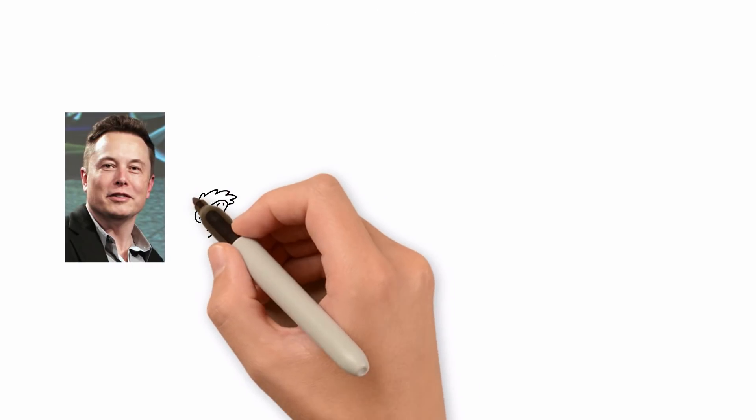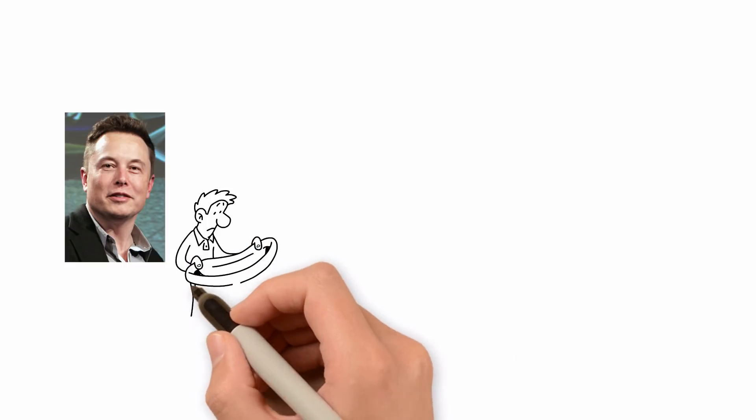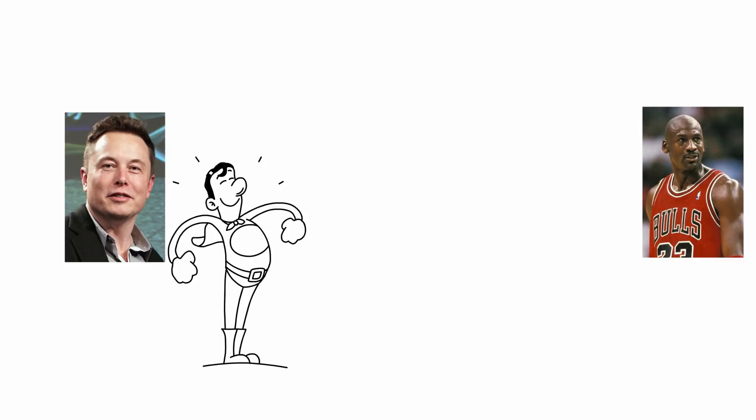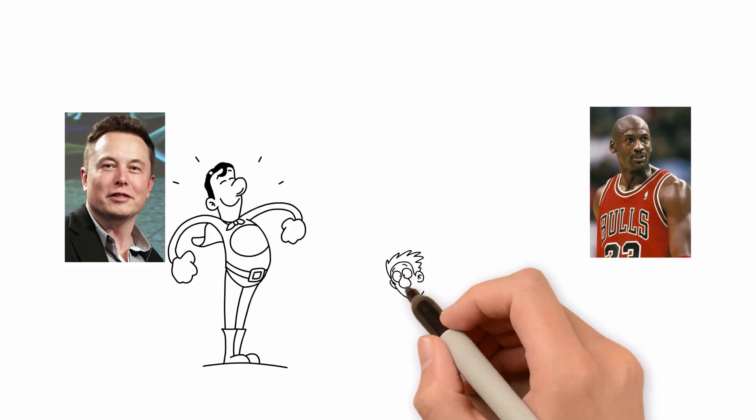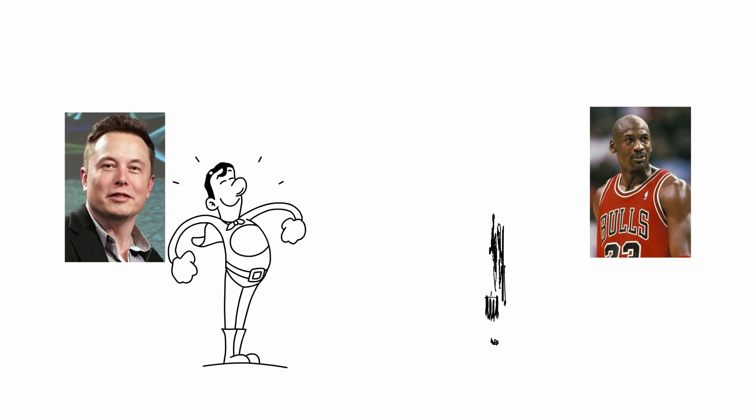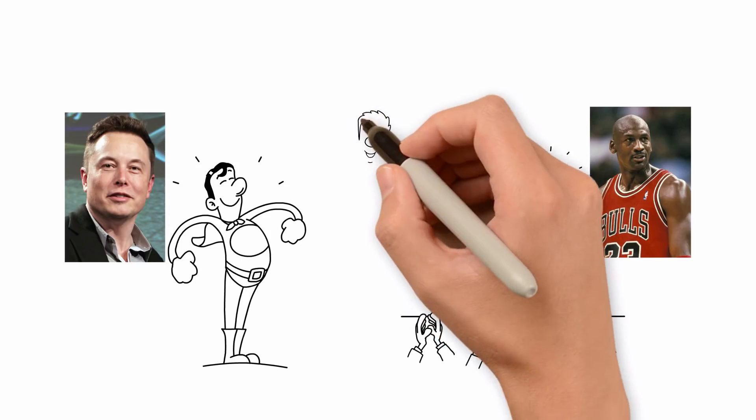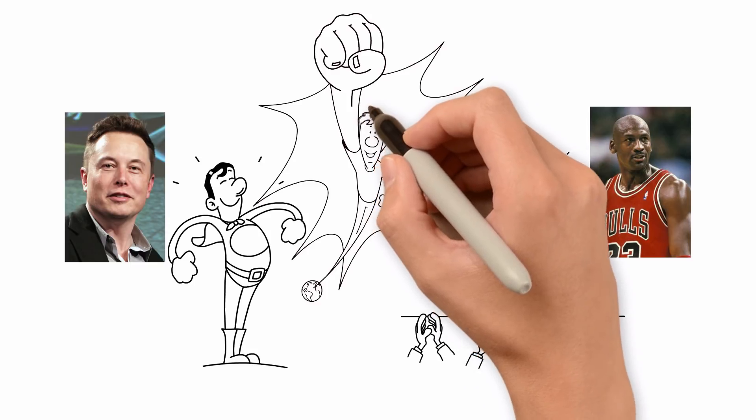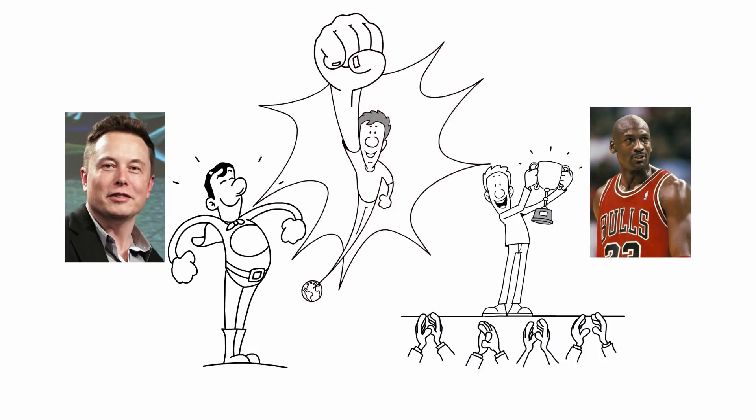Elon Musk was on the brink of losing both SpaceX and Tesla and going bankrupt in 2008. He rose from that setback to become one of the greatest entrepreneurs of our times. Michael Jordan was cut from his high school basketball team, and then he rose from that humiliating setback to become one of the greatest basketball players ever. These stories of rising from failure are what history is really made of.